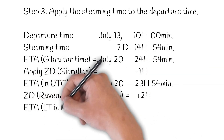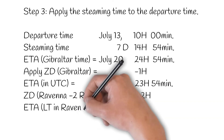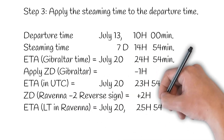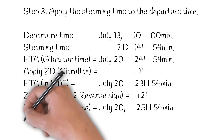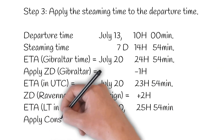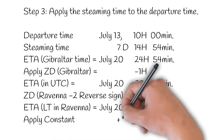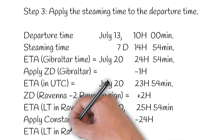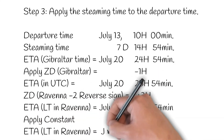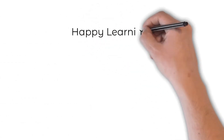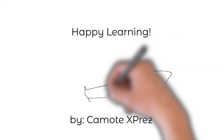That gives the ETA in local time in Ravenna, which is July 20th at 25 hours and 54 minutes. Since 25 is more than 24 hours, apply a constant of plus 1 day to the date and subtract 24 hours from the time. ETA in local time in Ravenna will be July 21st at 0154 hours. Happy learning — this lesson is from Kamute Express.